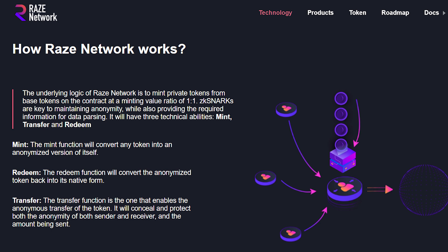Raze Network proposes to solve the privacy problem in a pretty simple but smart fashion. The underlying logic is to mint private tokens from base tokens on the contract at a minting value ratio of 1 to 1. ZK-SNARKs are key to maintaining anonymity while also providing the required information for data parsing.